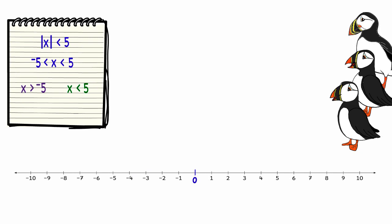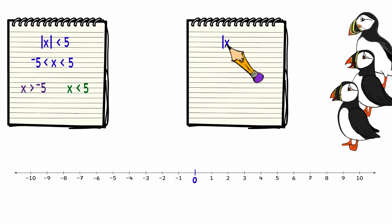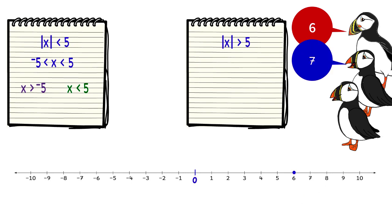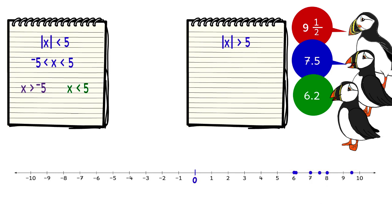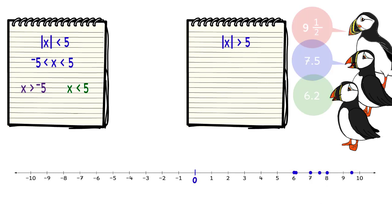Now let's look at the inequality: the absolute value of x is greater than 5. This time we are looking for numbers that are greater than 5 spaces away from 0. We can make a list: 6, 7, 8, 9 and a half, 7.5, 6.2. A simple way to describe all those numbers is x is greater than 5.